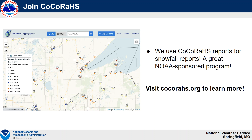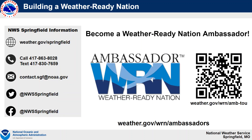Another excellent program is called CoCoRaHS. CoCoRaHS observers measure snowfall and rainfall daily. This is a free, NOAA-sponsored program. If you're really interested, please visit CoCoRaHS.org. This snowfall and rainfall data goes to the National Weather Service quickly and we're able to see and utilize these reports. That's the end of this video on snow and ice reports. Please stay tuned for additional videos and thanks for watching.